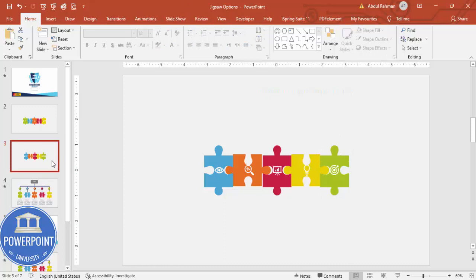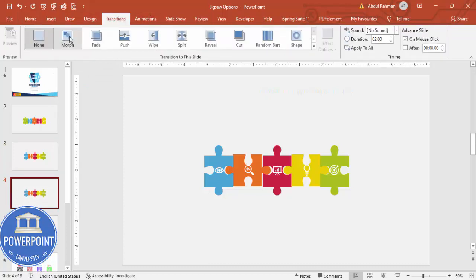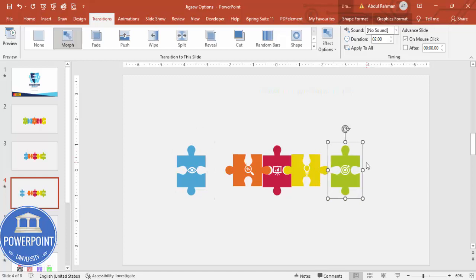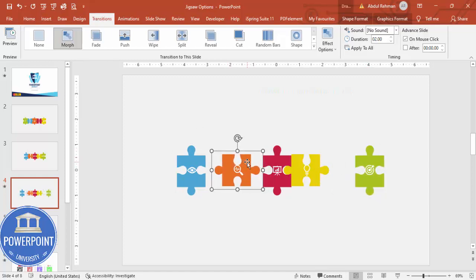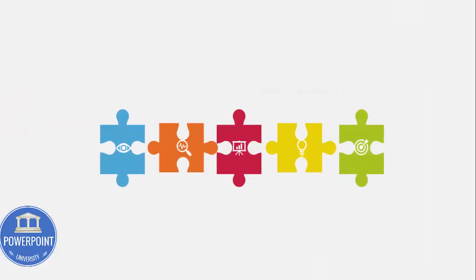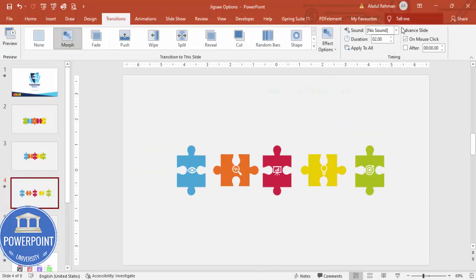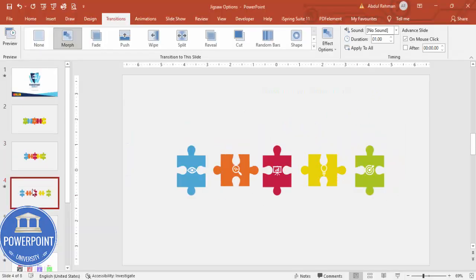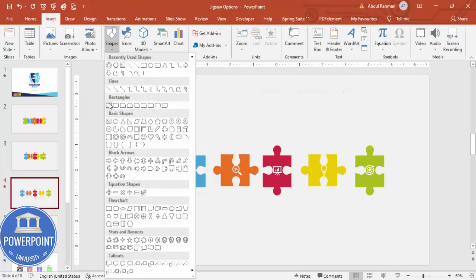Once this is done, I'm going to duplicate this slide — right-click and duplicate. On the new slide, I'm going to set the transition to Morph effect. Then on this slide I'll move each piece away one by one. If I play the slide it looks like this. If you want it faster, reduce the duration to one second.